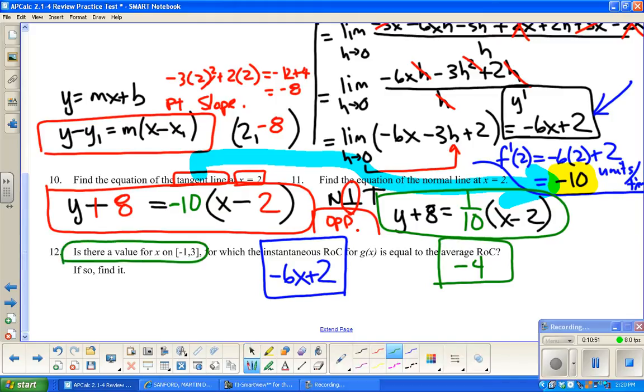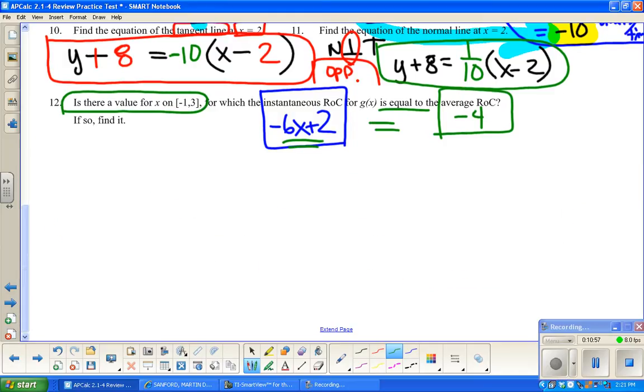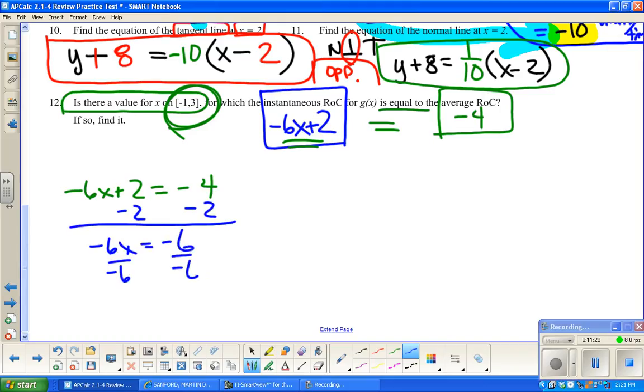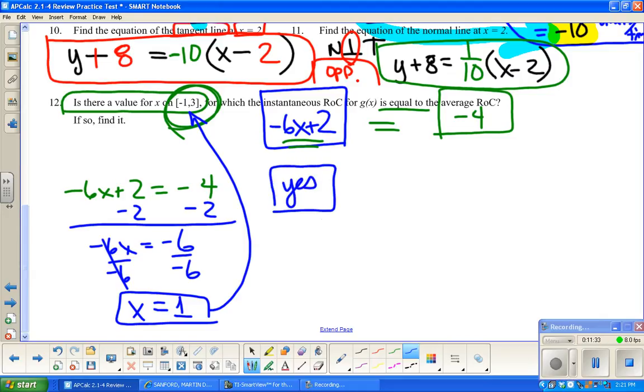It says, is there a value for x where this thing is equal to, well, how would you write equal to? So all I'm doing is negative 6x plus 2 equals negative 4, and I'm going to solve this for x. If that value happens to lie on this, then the answer is yes, and we've found it. Minus 2 divided by negative 6, so x equals 1. Is 1 between negative 1 and 3? Yep. So is there a value? Yes. What is that value? x equals 1.